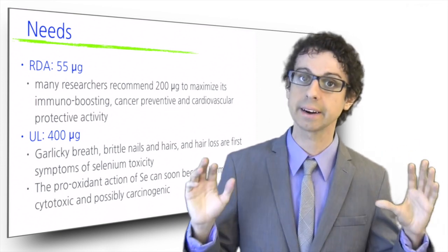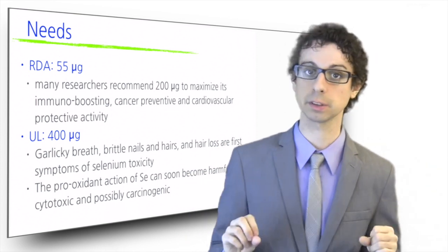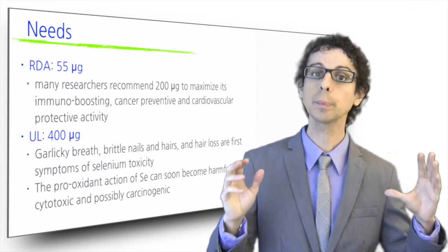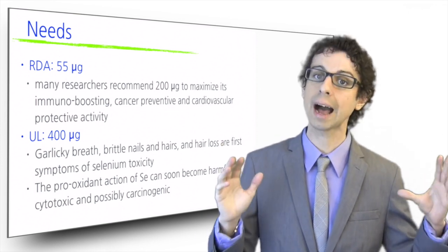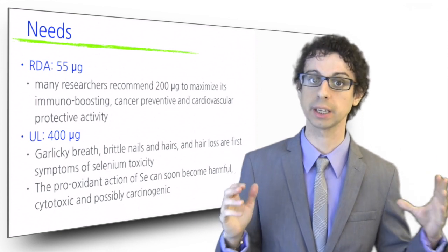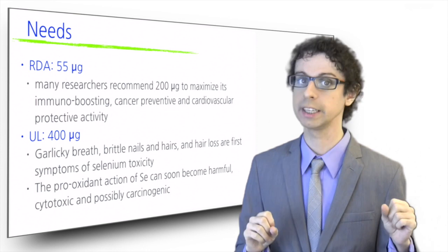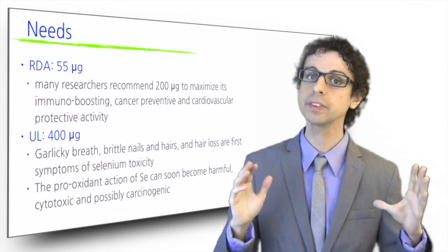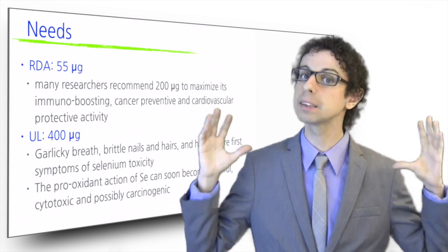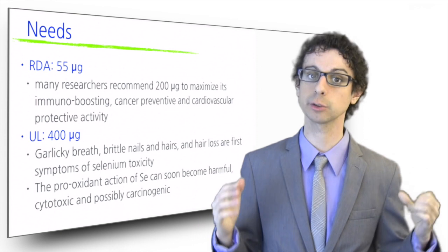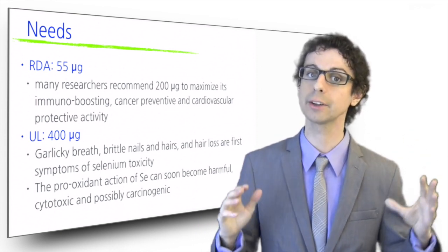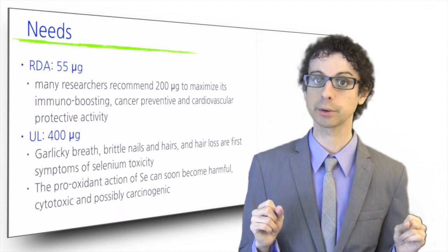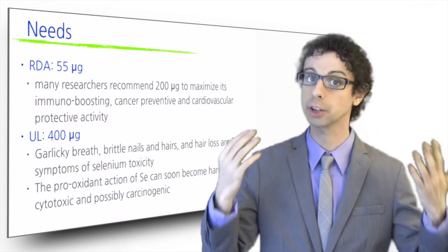Garlicky breath, brittle nails and hair, and hair loss are among the first symptoms of selenium toxicity. The recommended daily allowance for selenium is 55 micrograms. This is what is required to optimize glutathione peroxidase activity, and is also adequate to allow proper thyroid functioning and to prevent Keshan's disease. The RDA for selenium is easily met in our average diets, but many researchers believe that 55 micrograms per day may not be optimal to maximize its immune-boosting, cancer-preventive, and cardiovascular-protective activity, and they recommend an intake of 200 micrograms instead. The upper level for selenium, however, is set at 400 micrograms, so the range of selenium that is adequate and yet not toxic is pretty narrow.